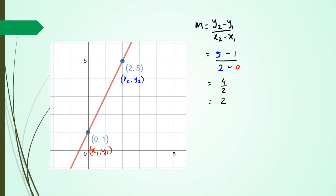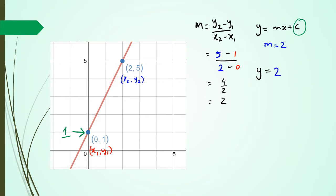You might remember from year 11 that the equation of a straight line is y equals mx plus c. We've already figured out that the gradient is equal to 2. The c value is known as the y-intercept — it is the y value where the line cuts the y-axis. In this case the c value is going to be 1, so we can write this equation as y equals 2x plus 1.